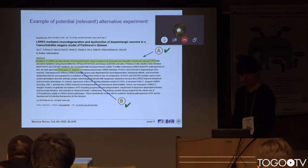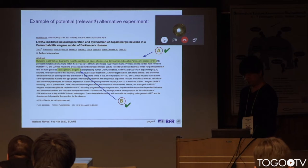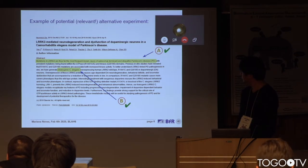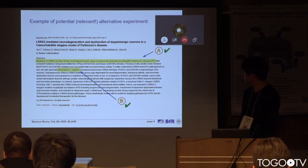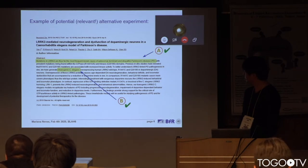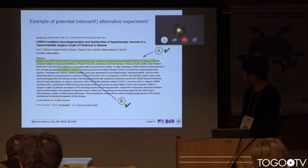Here I show another potential alternative method, since this publication also addresses the same research goal — again, mutation in that particular gene as a cause for Parkinson's disease. But this time, the proposed method relies on C. elegans worms, which is a species not protected by the European or the German laws, and thus a valid alternative method to the input publication.